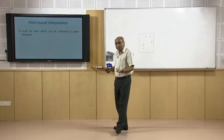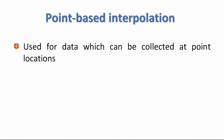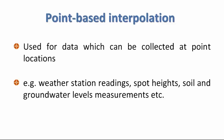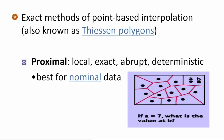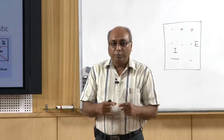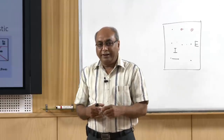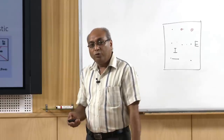Point-based interpolation is used for data collected at point locations, such as rainfall, weather readings, spot heights, soil values, groundwater levels, and water quality. An example of an exact method is the Thiessen polygon. In hydrology, before GIS tools were available, people used Thiessen polygons for rainfall surfaces — polygons created around observation points by keeping equal perpendicular distances. This method is local, exact, abrupt, and deterministic.